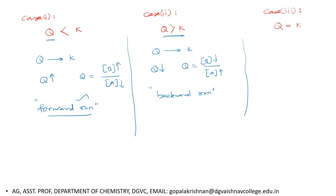Case 3: if Q and K are equal, the reaction has already attained equilibrium. When equilibrium is attained, we do not use the symbol Q at all — it becomes the equilibrium constant. So keep this information in mind: this is how reaction quotient is related to the equilibrium constant.